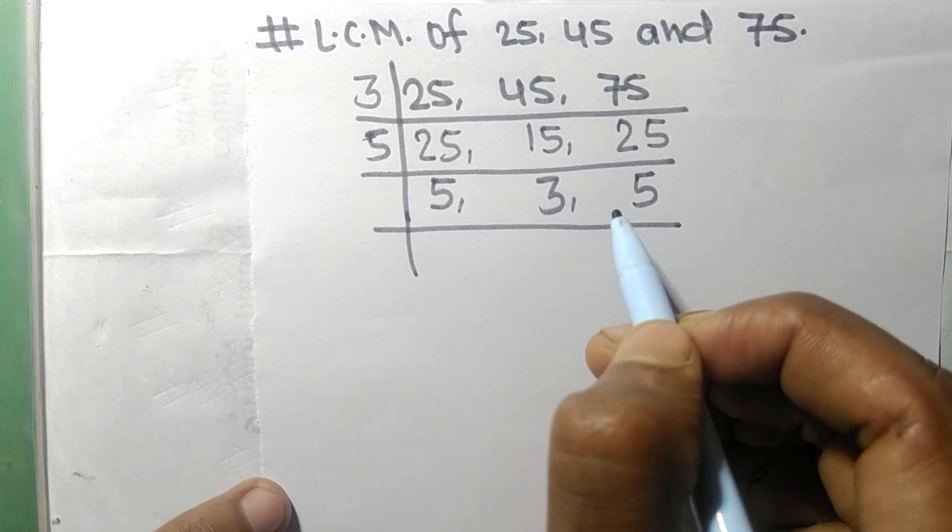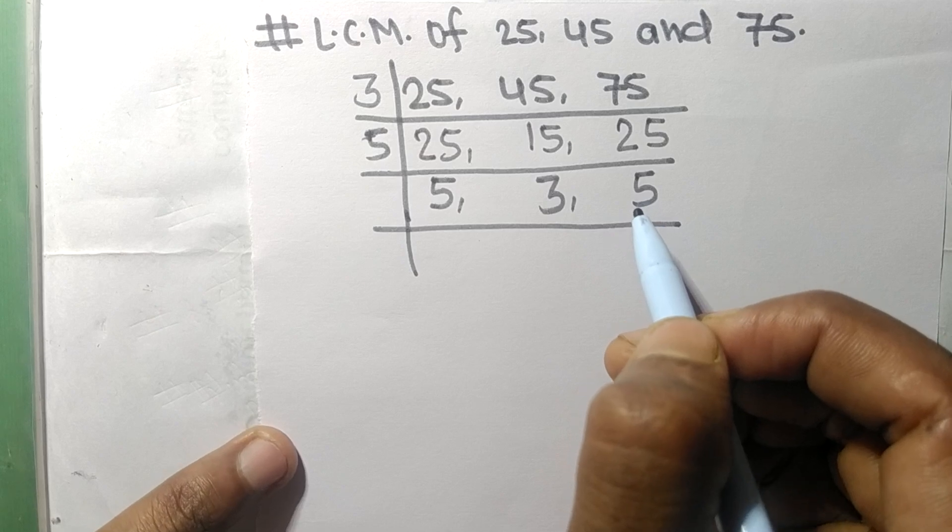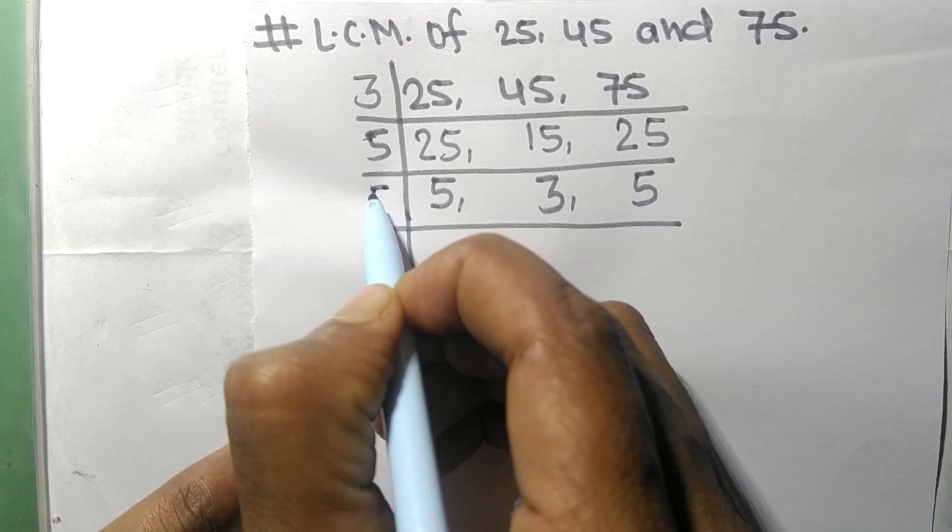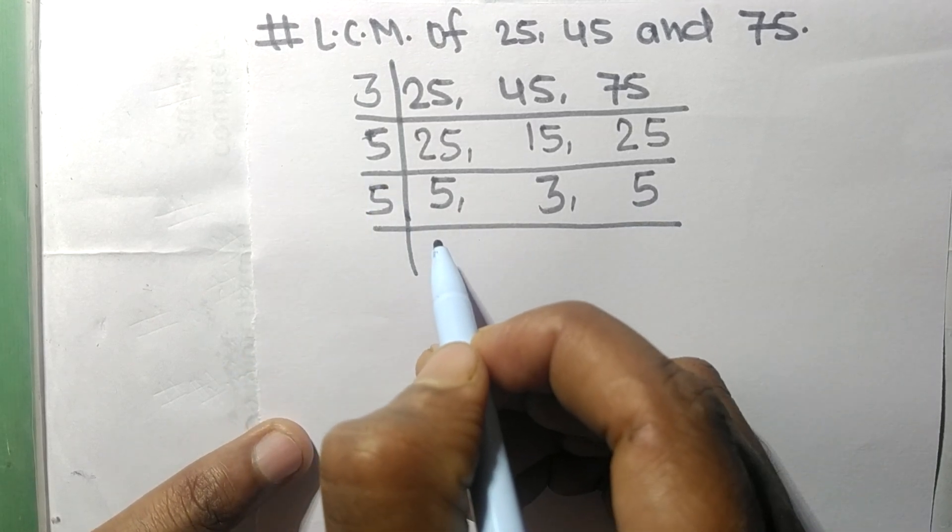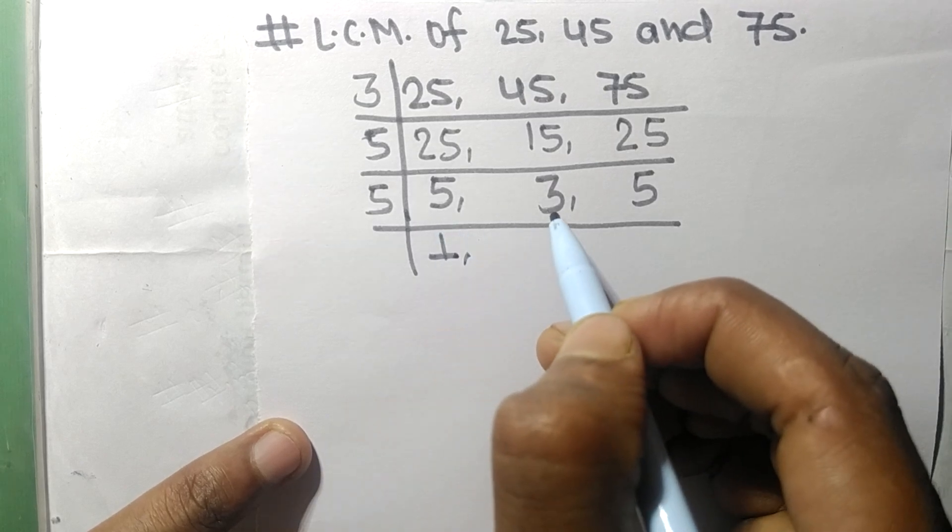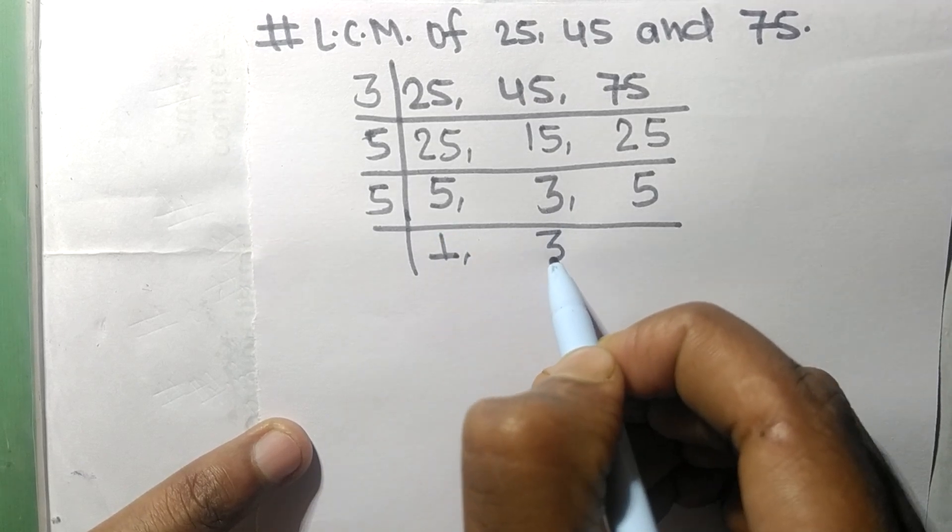These both 5s are exactly divisible by 5. 5 times 1 equals 5. 3 is not divisible, so it stays the same. 5 times 1 equals 5.